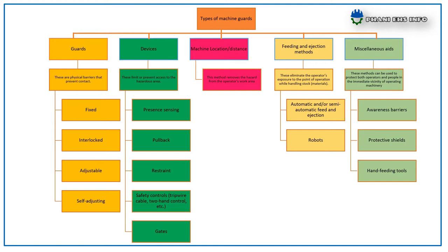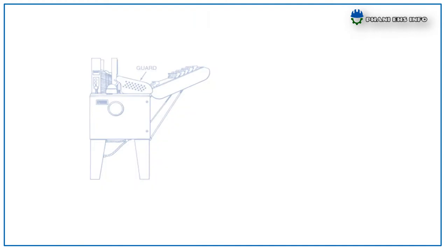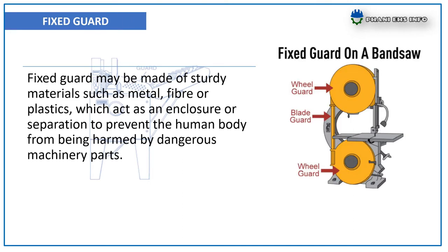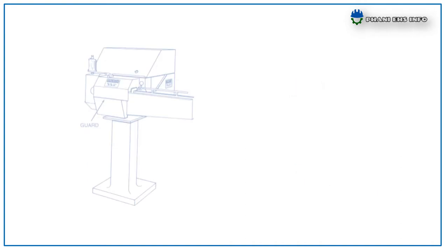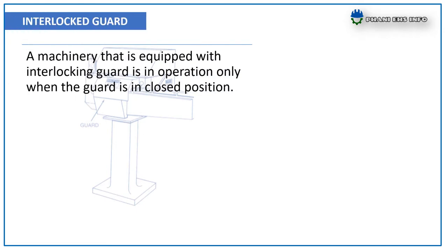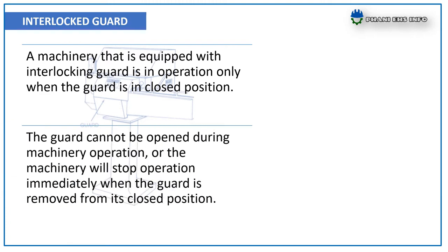Fixed guards may be made of sturdy materials such as metal, fiber, or plastic, which act as an enclosure or separation to prevent a human body from being harmed by dangerous machinery parts. Example: fixed guard on a bandsaw. Interlocked guard — a machine equipped with an interlocking guard is in operation only when the guard is in the closed position. The guard cannot be opened during machine operation, or the machine will stop immediately when the guard is removed from its closed position.